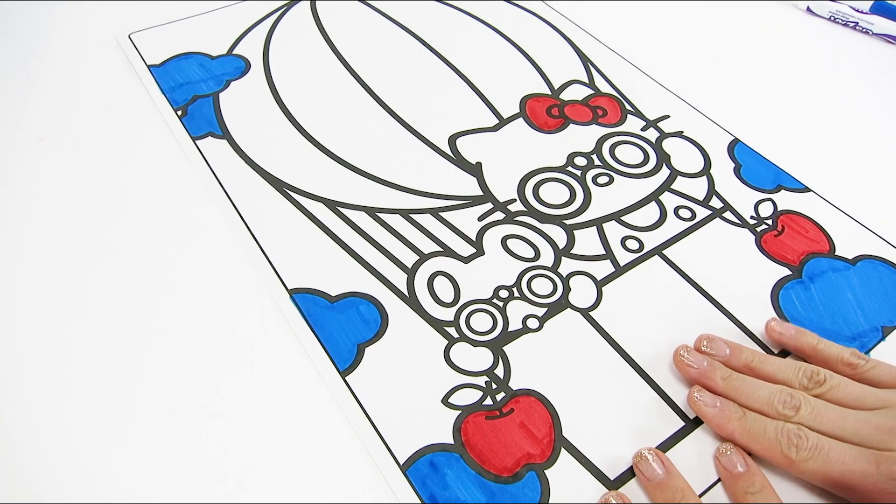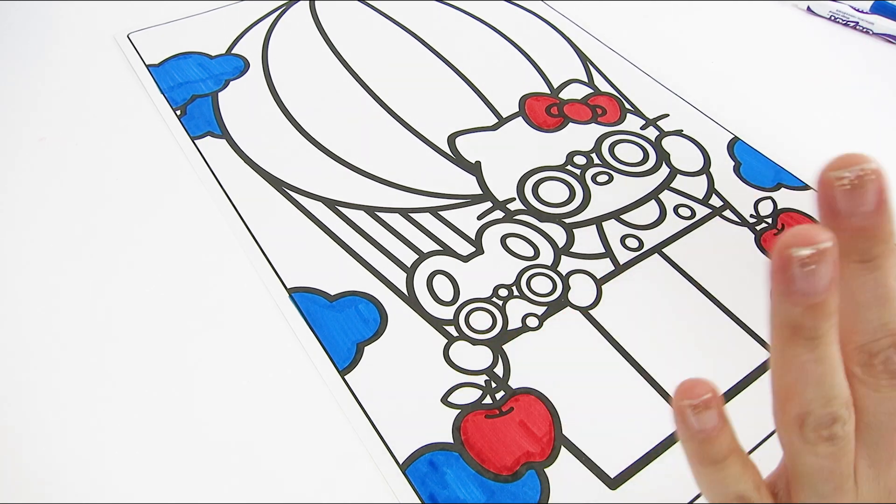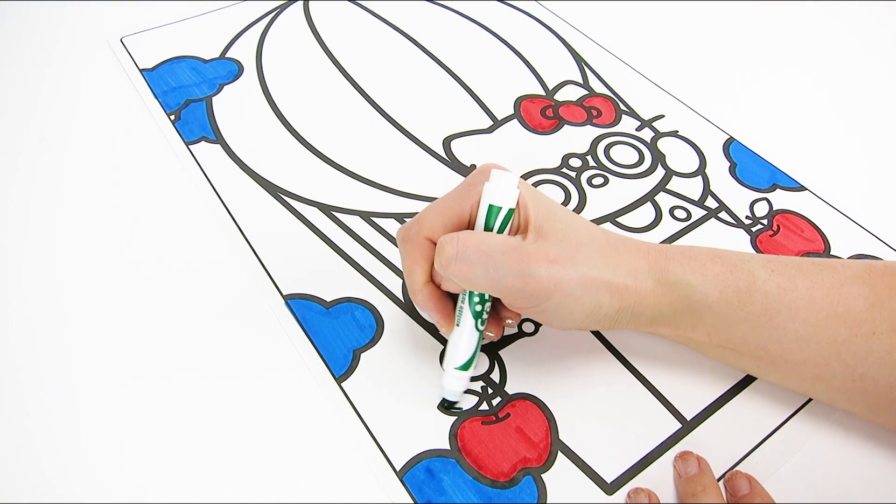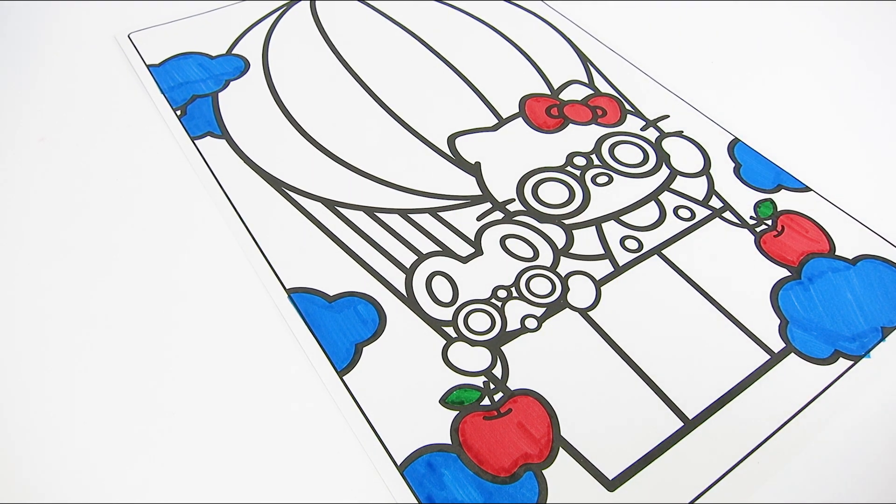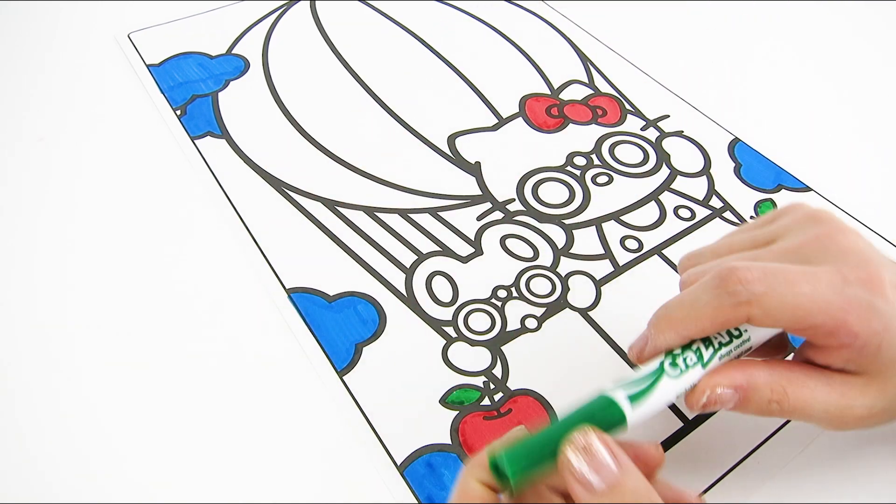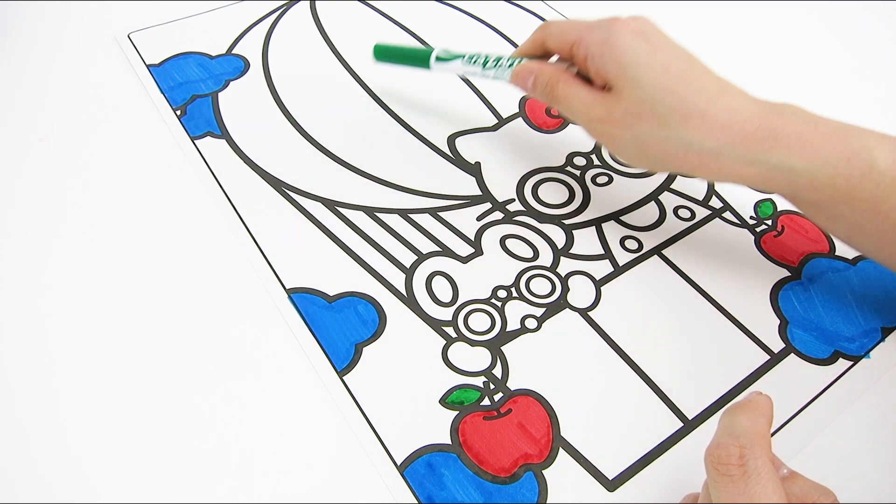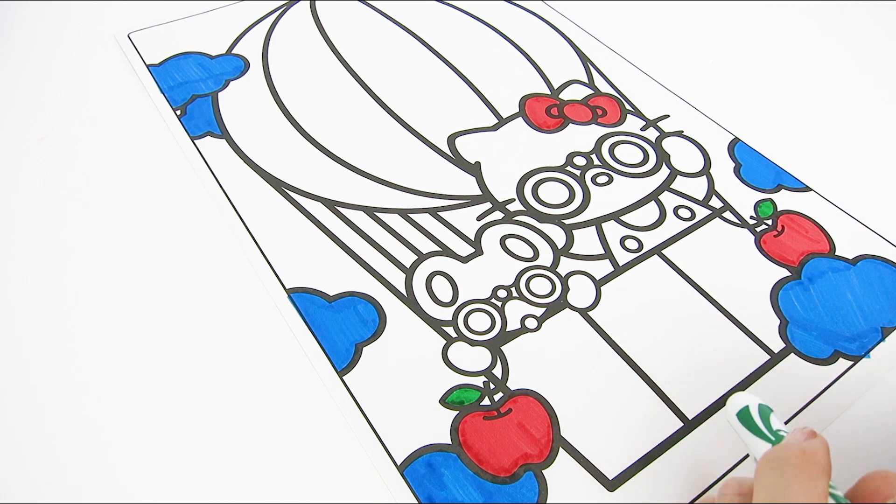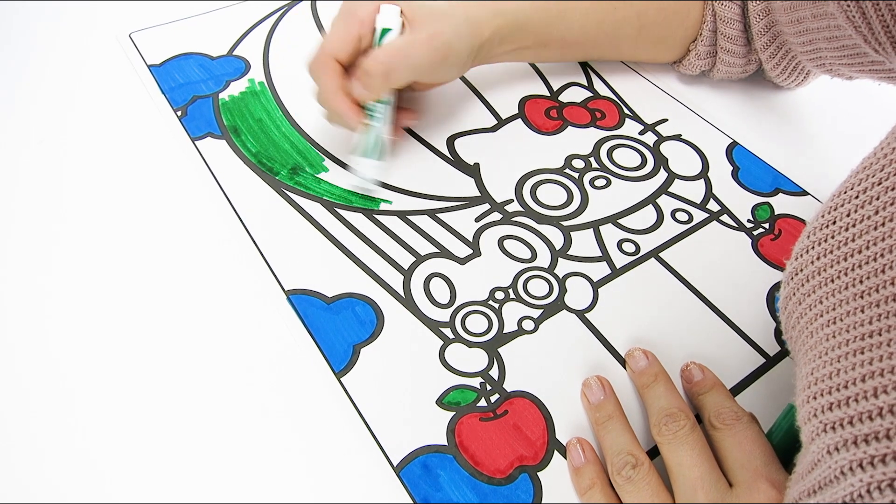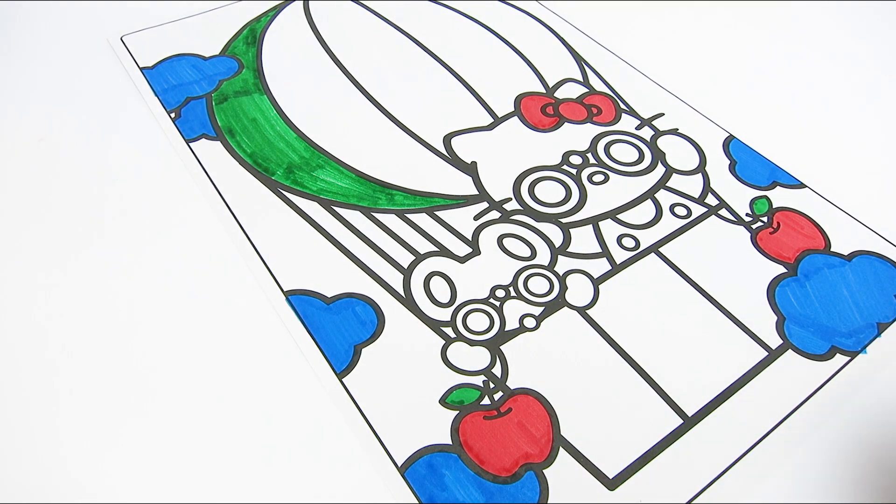Good idea. Well, we can't forget that apples also have leaves. And leaves are... Yep, they're green. I sure do love the color green. I wish there was something else I could color green. How about one of the stripes on the balloon? Yeah, that's a great idea. Looks great.